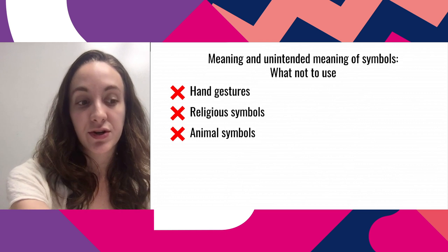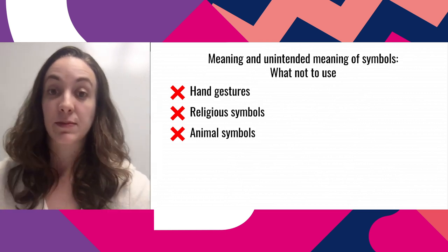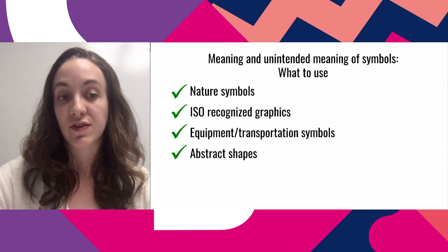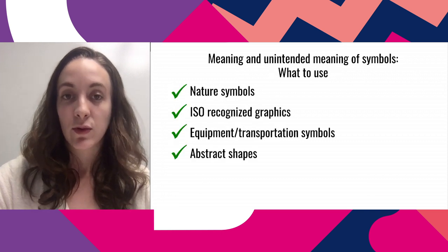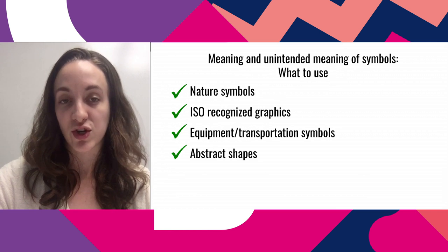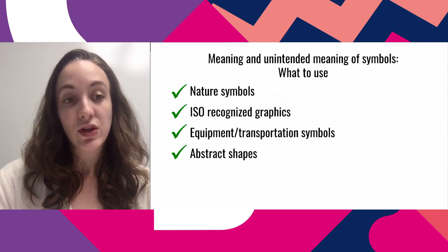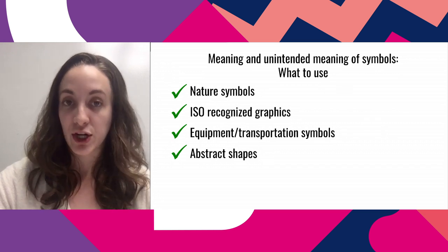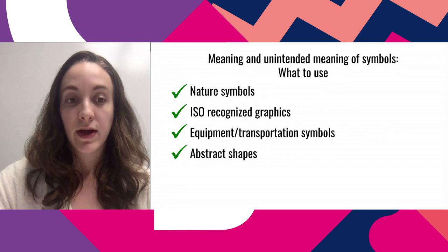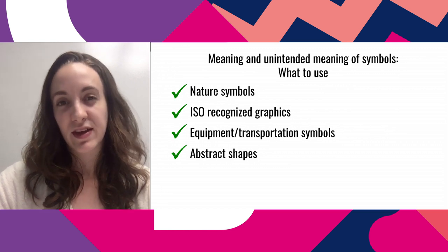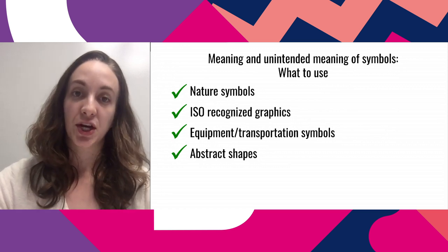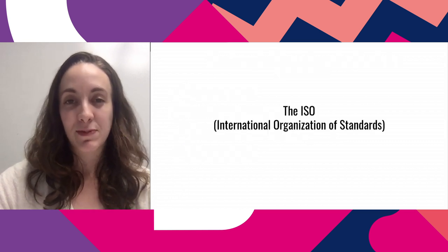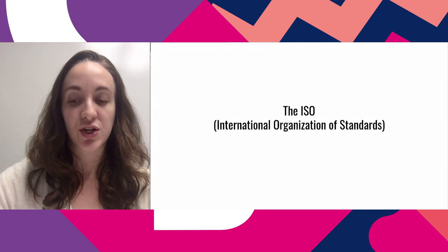The International Standards Organization provides some guidelines on symbols. You want to stay away in general from hand gestures, religious symbols, and animals, which can be ambiguous culturally. You can use nature symbols like sun, rain, or flowers. Graphics officially recognized by the ISO and symbols representing equipment or transportation — like a truck or a hammer — are pretty safe. Abstract shapes like circles and squares are also good choices.